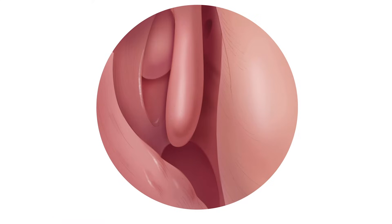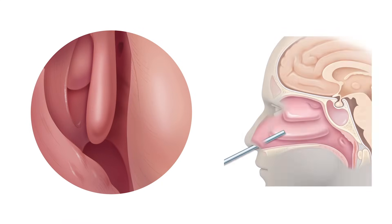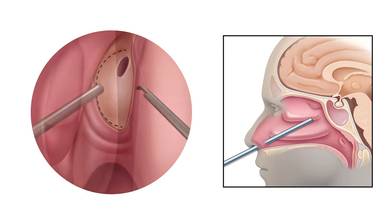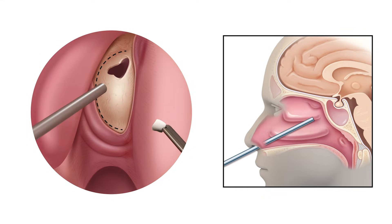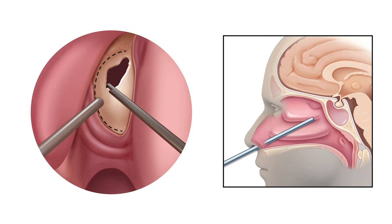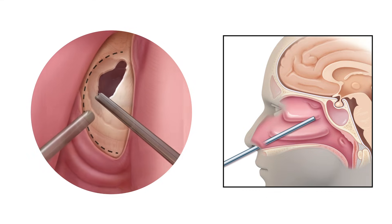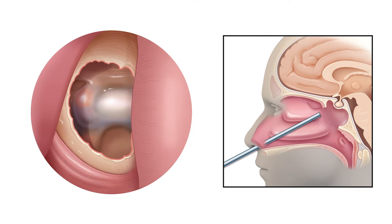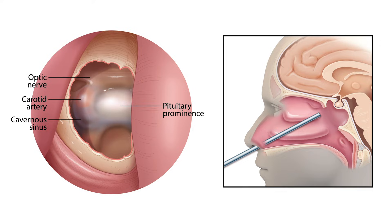With the collaboration of our ENT colleagues, we proceed with opening of the sphenoid sinus. This gives us access to the posterior wall of the sphenoid sinus, where we can identify the prominence of the pituitary gland, carotid arteries, cavernous sinus, and optic nerves.